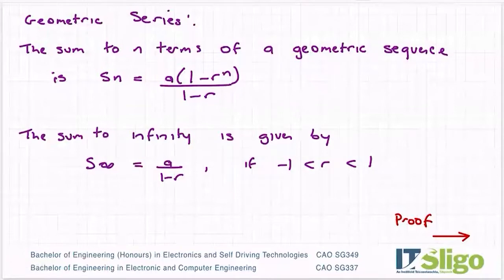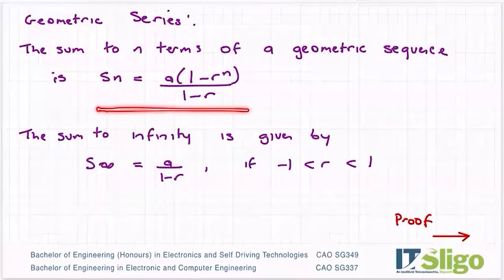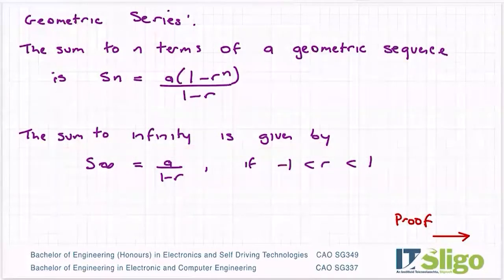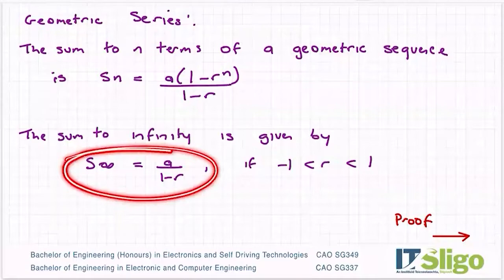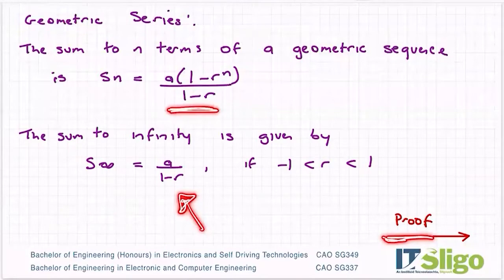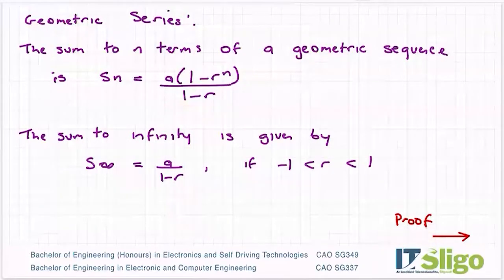So the sum to n terms of a geometric sequence — the same one in the log tables — is Sn equal to a times one minus r to the power of n over one minus r. The sum to infinity is equal to a over one minus r. This formula comes up a lot in exam questions, so we'll see it quite a bit in the next class. I just want to take you through the proof, or where this comes out of.